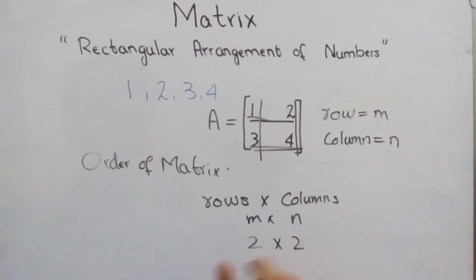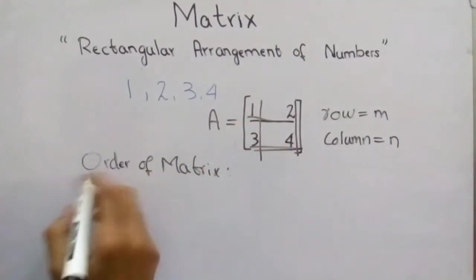2 multiply 2 is the order of matrix. And 1, 2, 3, 4 are the elements of matrix A. So to determine how many elements this A consists of, we don't know its elements, so to know the elements we use the order of the matrix formula.